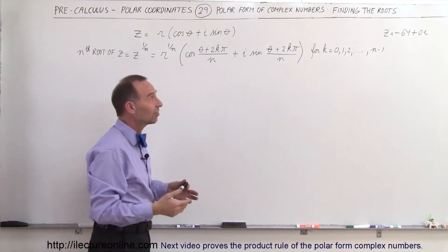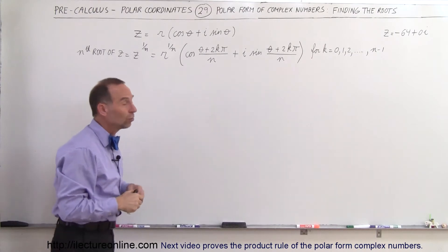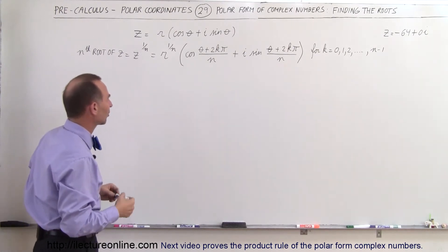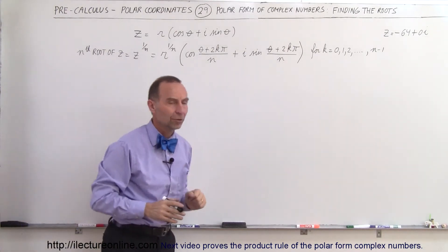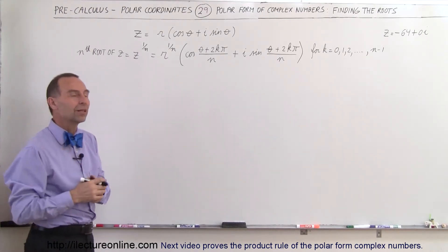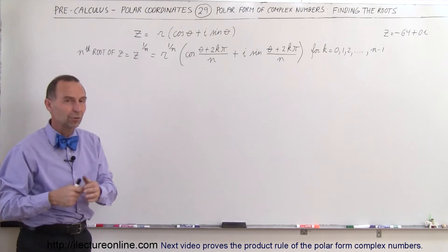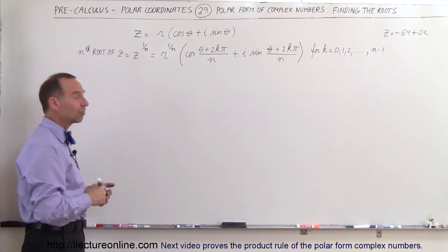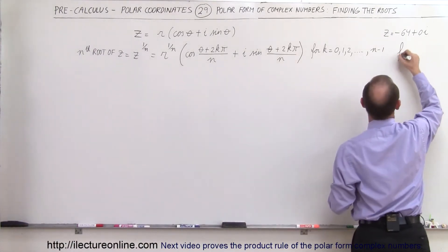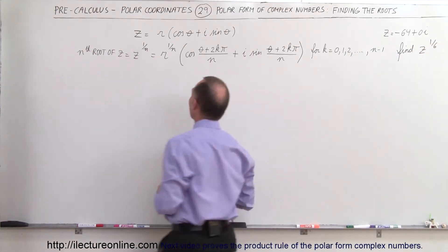So if the root is 6, you would have 6 values for k: 0, 1, 2, 3, 4, 5 — ending at n minus 1. There would be 6 roots if you take z to the 1/6th power. If you take the 10th root of a complex number, there would be 10 roots to look for. As our example, we're going to find z to the 1/6th power, so there will be 6 different roots.